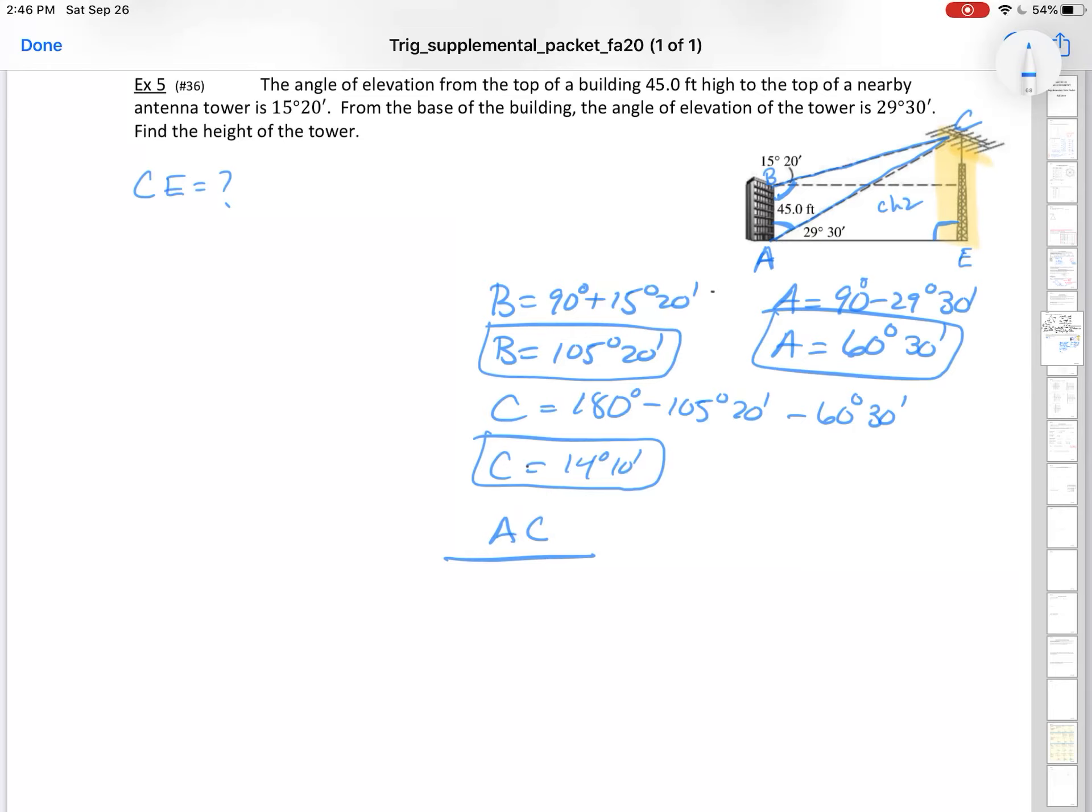I'll call that side length AC. That's what I want. AC times the sine of the angle opposite it. Well, that angle opposite is B. So that's 105 degrees 20 minutes, is equal to 45, that height of the building, all over the sine of C. So I did need to know what C was. 14 degrees 10 minutes. Makes sense that we need to know that. And so what are we going to do? Just our nice algebra that we've been doing. We're going to take 45, divide it by the sine of 14 plus 10 divided by 60, times sine of 105 plus 20 divided by 60. And we're going to get a nice 177.3 feet.